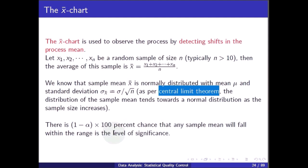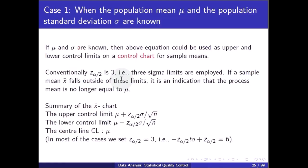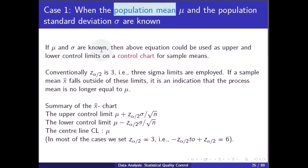Case 1: when the population mean mu and population standard deviation sigma are known. If mu and sigma are known, the above equation can be used as upper and lower control limits on a control chart for sample means. Conventionally, z_alpha/2 = 3, meaning 3-sigma limits are employed. If a sample mean x-bar falls outside these limits, it indicates the process mean is no longer equal to mu.